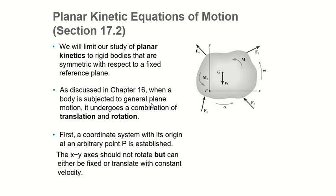We recall our general plane motion, which is a combination of translation and rotation. We always deal with a coordinate system with the origin at an arbitrary point, B in this case. The xy axis should not rotate, but it can translate.